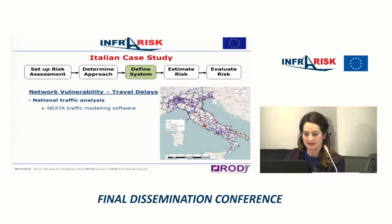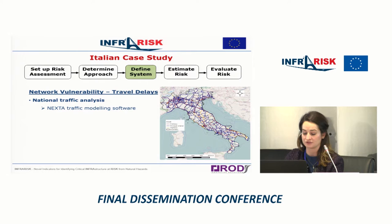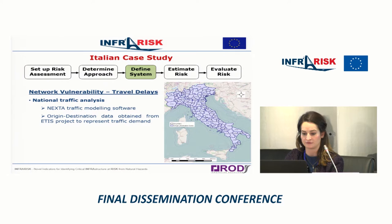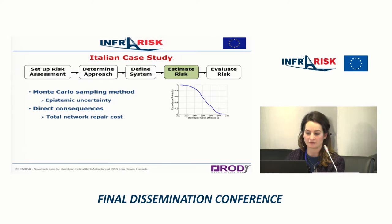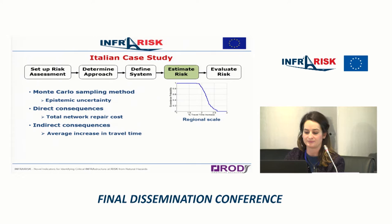We also conducted this analysis at national scale, looking at the wider impacts for the national road network, also using Nexta traffic modelling software. We obtained origin-destination data for Italy from the previous EU project, the ESS project, giving a representative look at demand for the network. We conducted Monte Carlo sampling to consider the epistemic uncertainties associated with network vulnerability and calculated the total network repair costs and the percentage increase in travel times at regional and national scales.